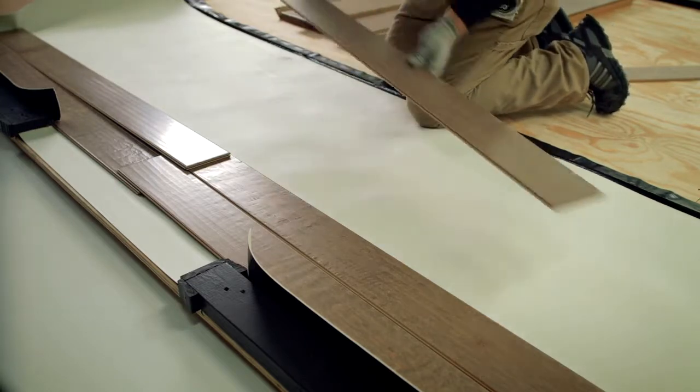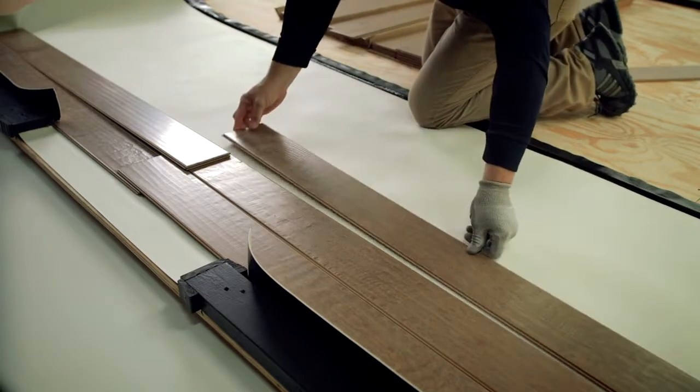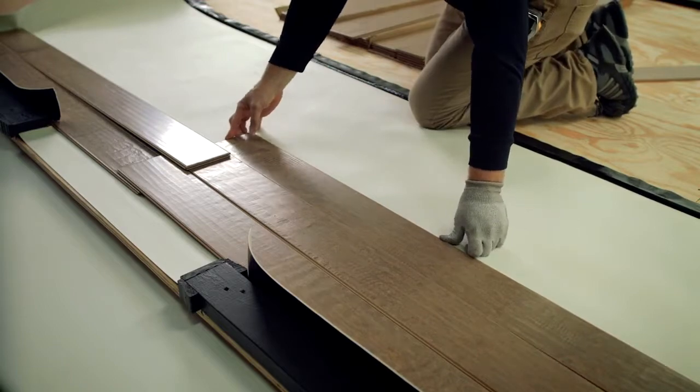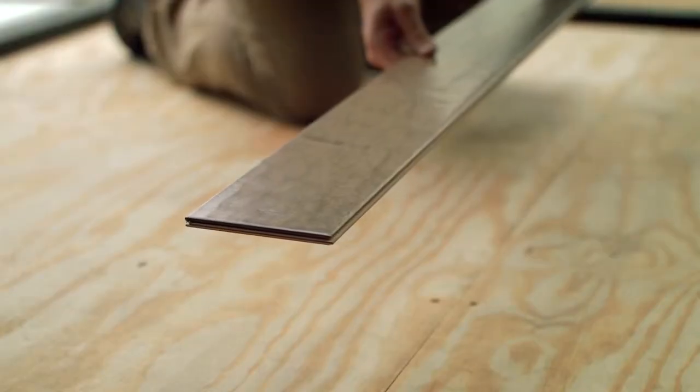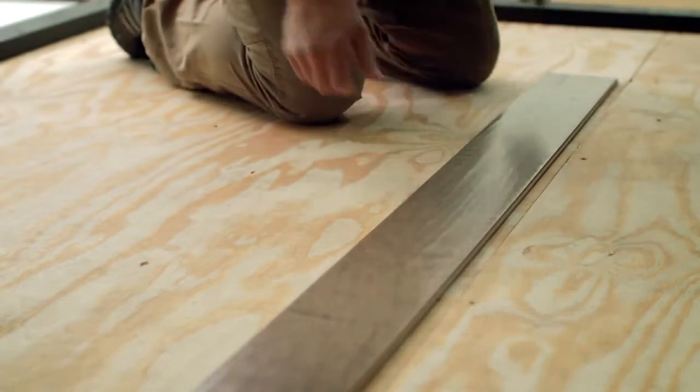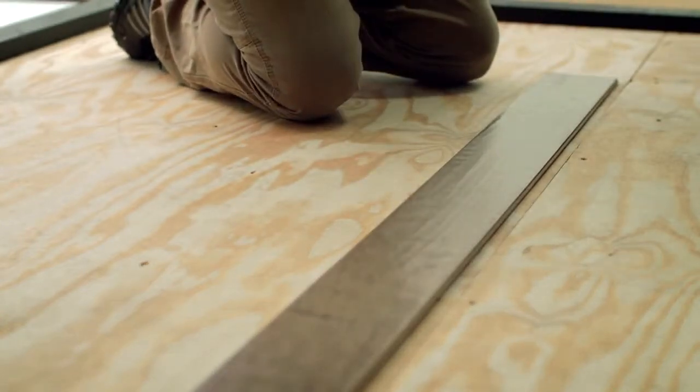First, you need to decide which direction to run the planks. Ideally, you should install the boards perpendicular to the direction of your floor joists. Once you know the direction, you'll decide your starting wall. Some homeowners find it easiest to run planks parallel to an exterior wall because they are often straighter than interior walls.